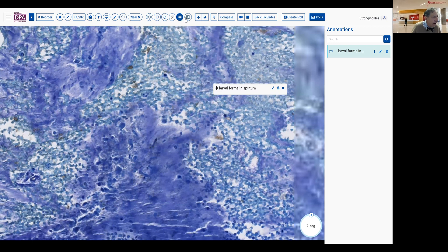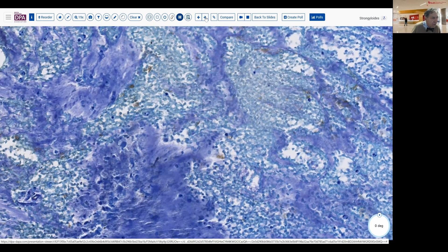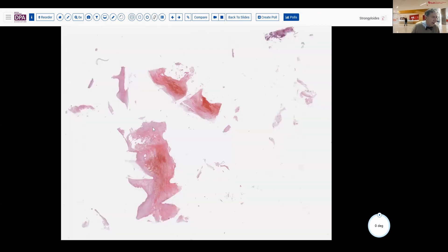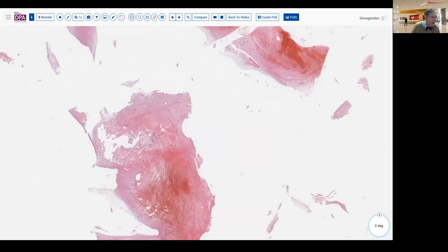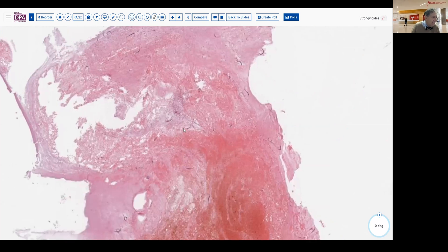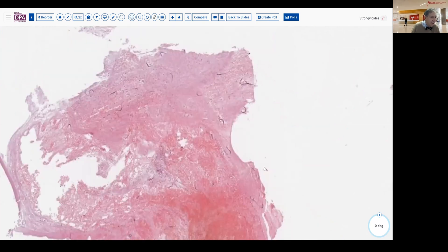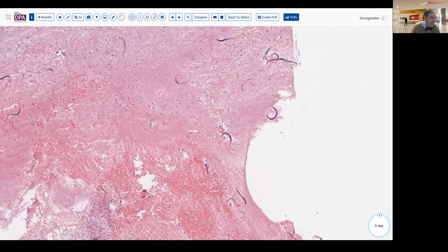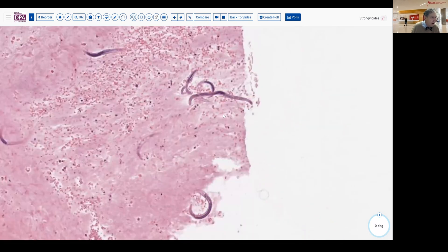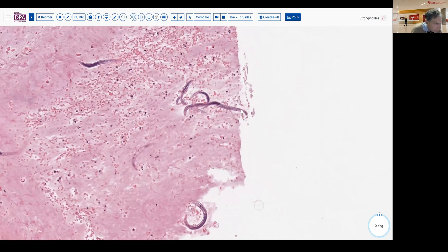In our next slide, also a sputum sample. This one stained rather with hematoxylin and eosin from sort of a sputum cell block that was concentrated. And I think you can see at low magnification that it's just filled with larval forms here in this sample. You know, worm after worm after worm here in the structure.